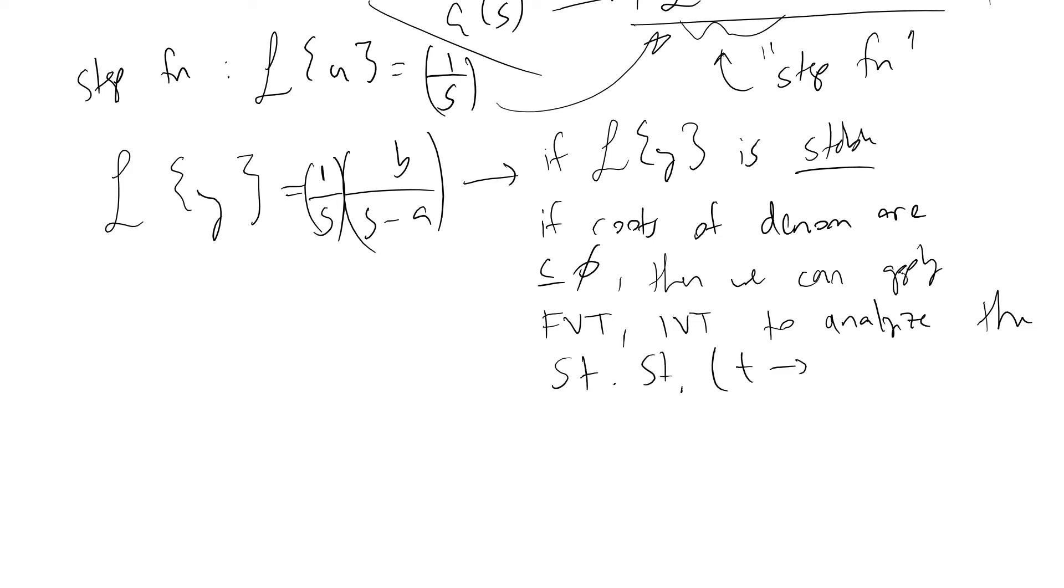Then we can apply the final value theorem and the initial value theorem to analyze the steady state, so that would be as t goes to infinity, and initial behavior as t goes to 0, respectively.